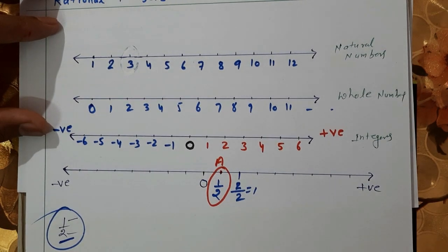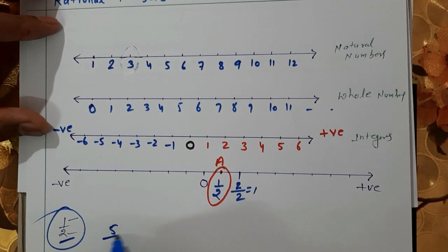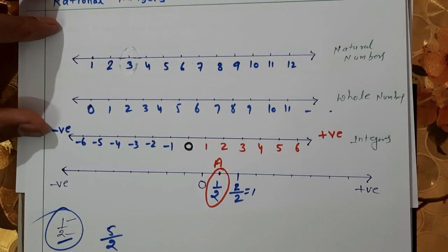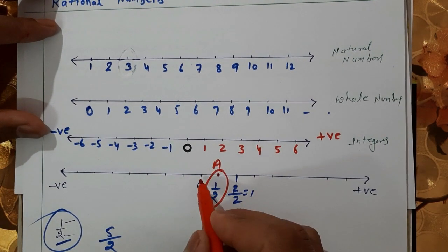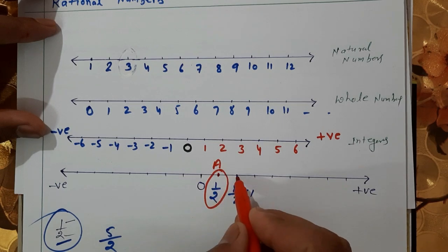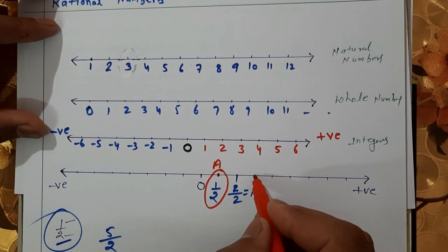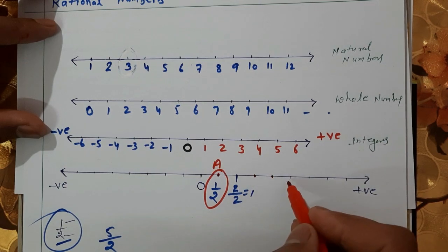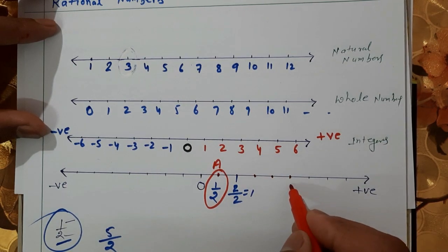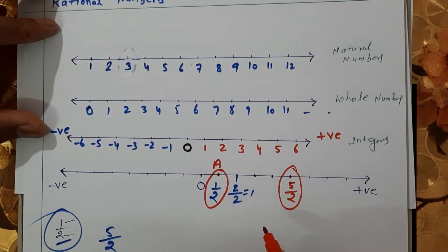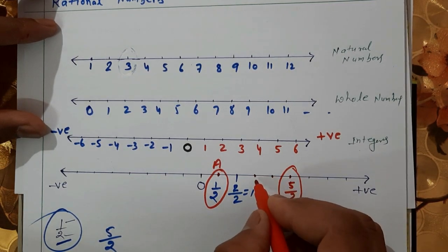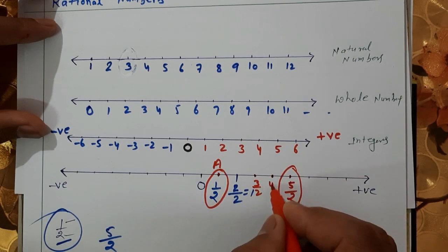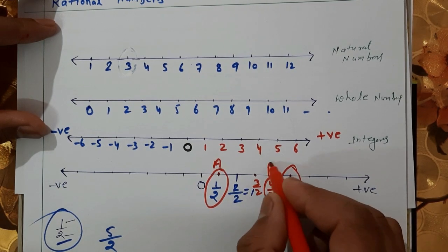Now we have to represent 5/2. Counting from 0: 1/2, 2/2, 3/2, 4/2, and this one is 5/2. Note that 4/2 means 2, so 5/2 lies between 2 and 3 on the number line.